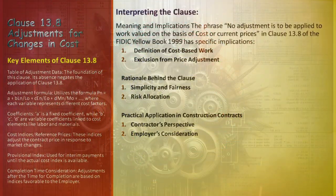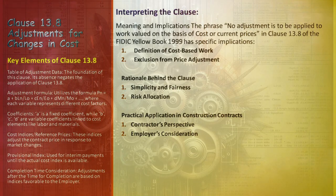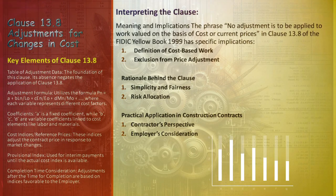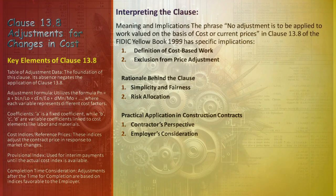Clause 13.8 is all about ensuring financial fairness in construction contracts. It addresses the need to adjust contract prices due to market changes. This includes variations in labor costs, material prices, and other essential inputs. These adjustments are crucial in preventing financial imbalances and disputes during the construction process.